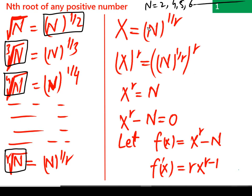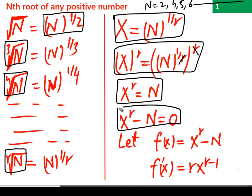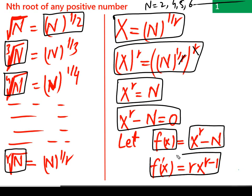Let's say x is equal to n to the power of 1 over r, where n is any number and r is any power. If we raise both sides to the power r, we get x to the power of r equals n. So we can rearrange this as f(x) = x^r − n, and the derivative f'(x) = r·x^(r−1).